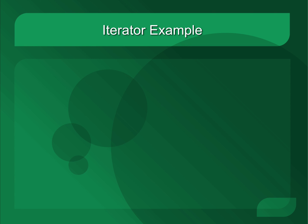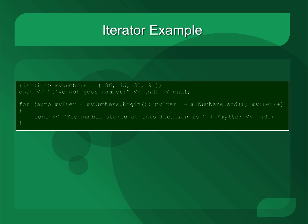Let's take a look at an example. In this example, we have a list called myNumbers composed of four integers: 86, 75, 30, and 9. It prints a header out to the screen and then loops through the list, printing out each element stored within it. In this case, we create an iterator called myiter that starts at the beginning of the list, goes through each element of the list, prints out the prompt and the data, and then terminates.